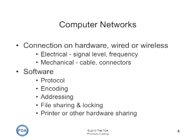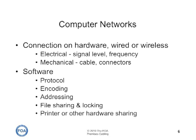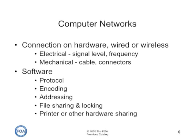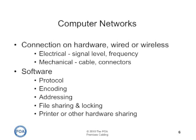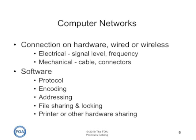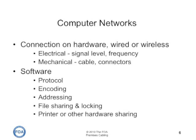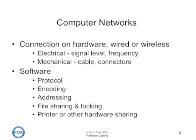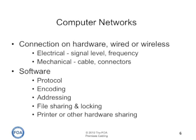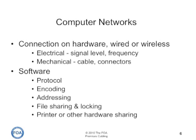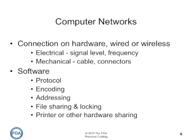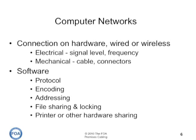Computer networks have two aspects: a physical connection on hardware, which can be either wired or wireless and includes electrical and mechanical specifications; and software, which includes the protocol of the network, how data is encoded and addressed, how file sharing and locking works, and how printer and other hardware sharing operates. That's all part of the network operating system and software.